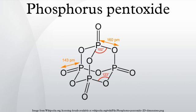If heated more rapidly it can sublimate. This form can be made by condensing the vapor of phosphorus pentoxide rapidly; the result is an extremely hygroscopic solid. The other polymorphs are polymeric.